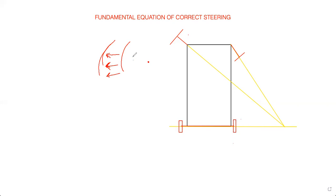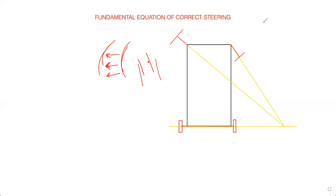Looking at this diagram, whenever the vehicle is going in a straight path, we won't face any type of problems because it is perfectly moving in translatory motion. But whenever we are negotiating a turn, maybe a right turn or a left turn, at that moment we will face some problems like there is a chance of skidding.